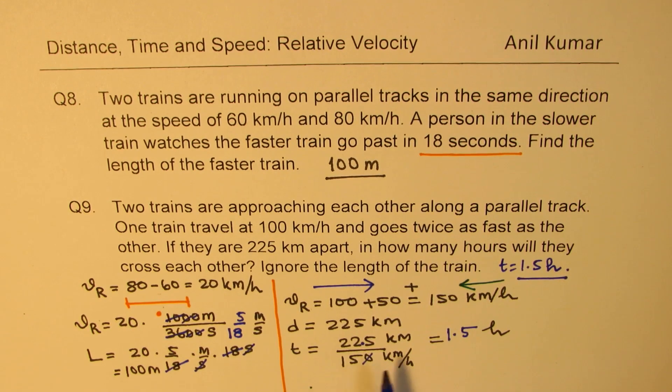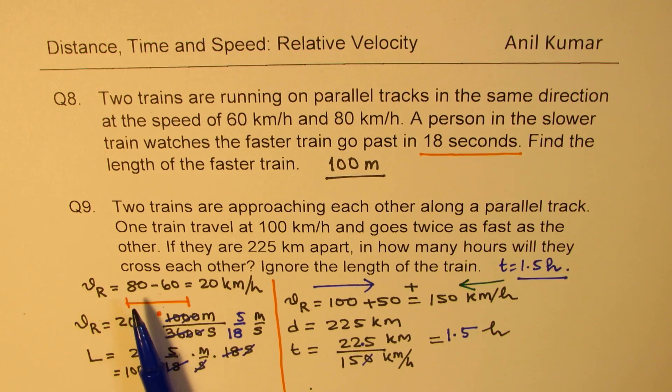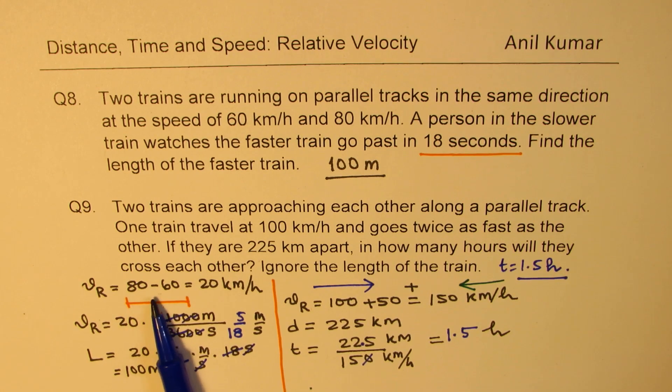It's not very difficult. The important thing here is to understand that the relative velocity, if they are moving in opposite direction, is higher, and if they are moving in the same direction, it's lower. Therefore, we took the difference in the first case and added them up in the second case. If that is clear to you, then these questions should not take much time.